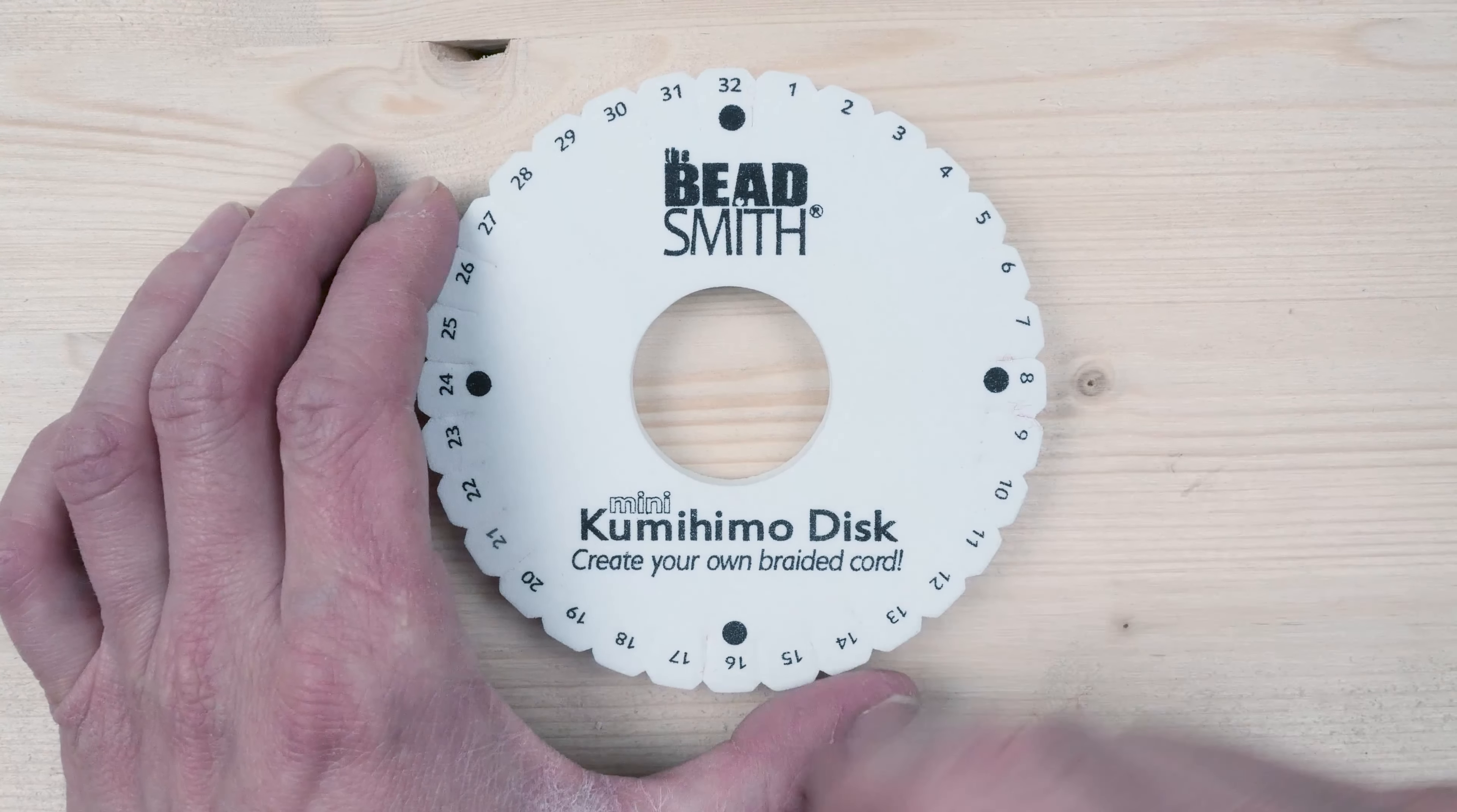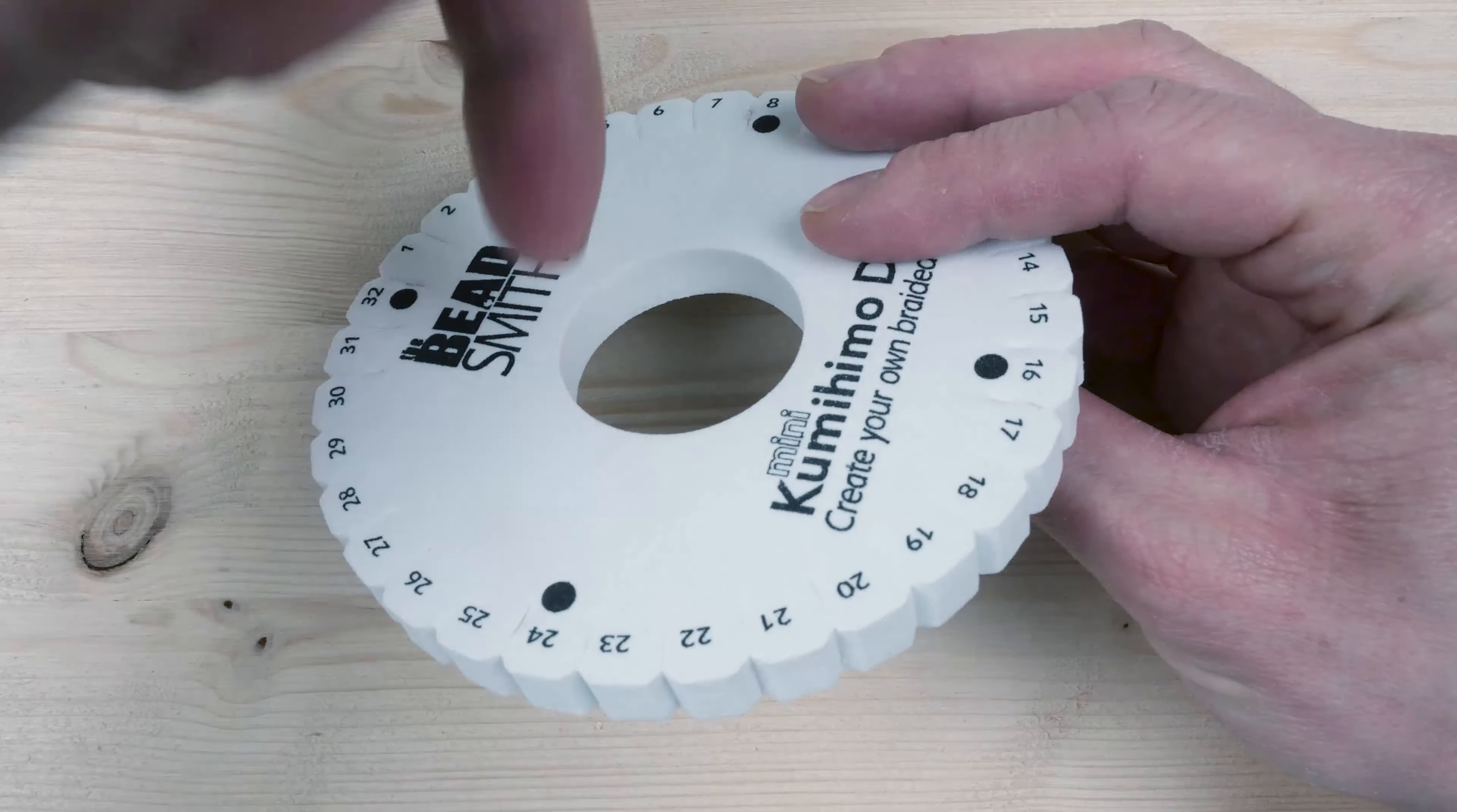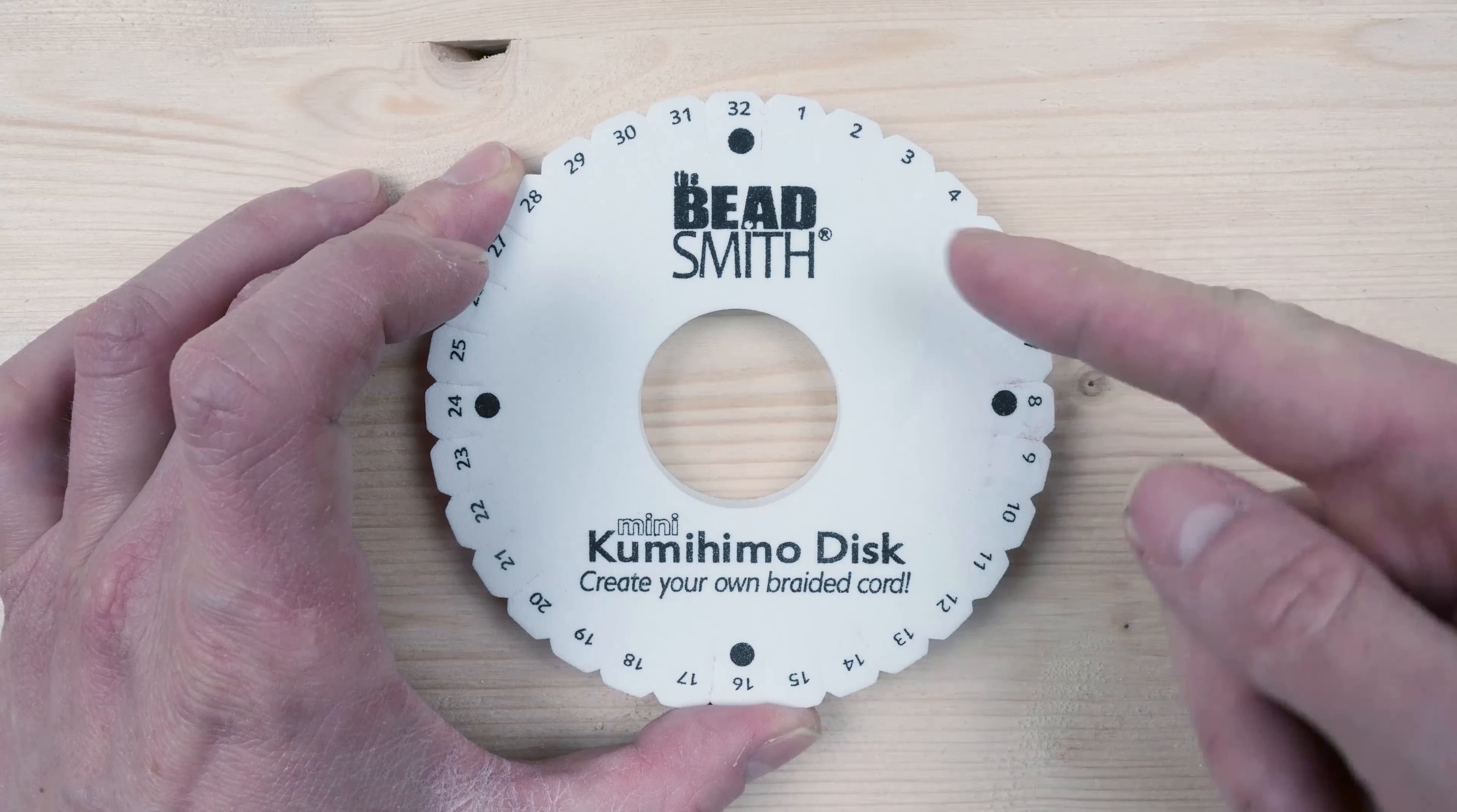The basic components of your disc are the hole through which your finished braid is going to pass. So the finished braid passes top down through your hole. The numbers here on the sides allow you to set up then execute your pattern.